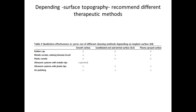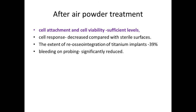According to surface topography of the implant, therapeutic methods differ. Metallic curettes or rotating titanium brushes can be used on sandblasted acid-etched surfaces. Plastic curettes should not be used on smooth, sandblasted, or plasma-sprayed surfaces. Ultrasonic systems with metallic tips can be used on smooth surfaces for polishing; with plastic tips on sandblasted acid-etched or plasma-sprayed surfaces. Air polishing can be used on all three implant surface topographies. After air-powder treatment, cell attachment and viability increase significantly.